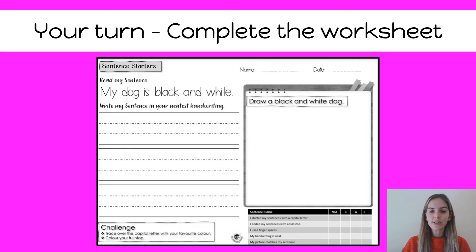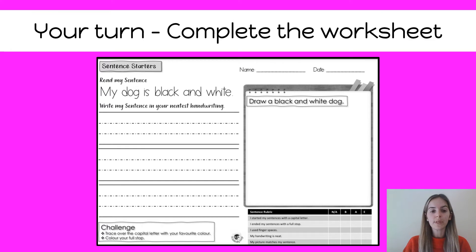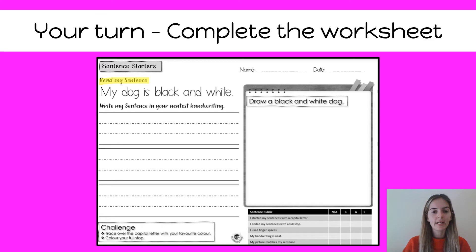Now it's your turn to complete the writing activity. You can do this on a piece of paper or you can do it in an exercise book. The first thing we're going to do is read the sentence, and we can do that one all together: 'My dog is black and white.'